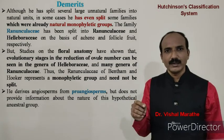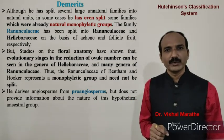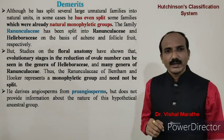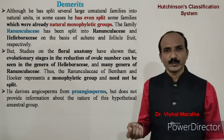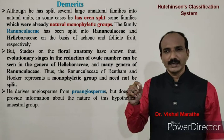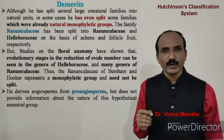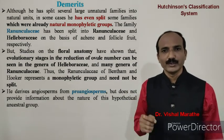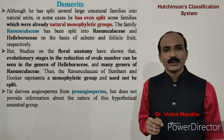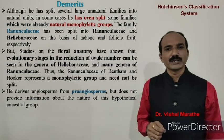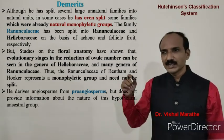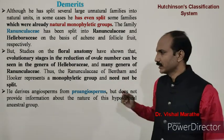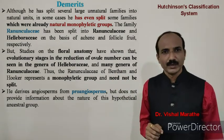Studies show that the Ranunculaceae of Bentham and Hooker represents a monophyletic group and need not be split. He derives angiosperms from a pro-angiosperm, providing a pro-angiosperm model for the origin of angiosperms, but does not provide information about the nature of this hypothetical ancestor group. These are the various demerits of this classification system.